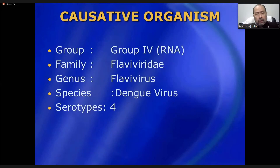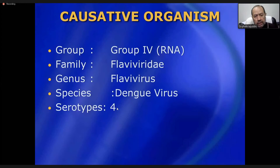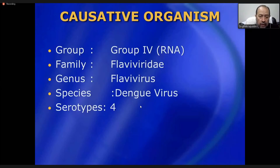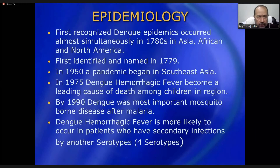The causative organism is dengue virus, belonging to the genus Flavivirus, family Flaviviridae. There are four serotypes: DEN-1, DEN-2, DEN-3, and DEN-4. These four serotypes are found in different mosquitoes and cause the disease in different populations.